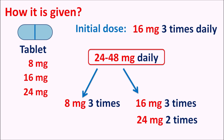In summary, betahistine is a histamine analog that acts as a histamine agonist at H1 receptors and as an antagonist at H3 receptors, which is responsible for increased release of histamine as well as other mediators such as 5-HT, improving the symptoms of Meniere's disease. The primary action is H1 receptor agonism, which increases vasodilation at the blood vessels supplying the inner ear, thereby reducing pressure within the endolymphatic space, preventing rupture of the labyrinth and loss of hearing, as well as reducing vertigo and tinnitus.